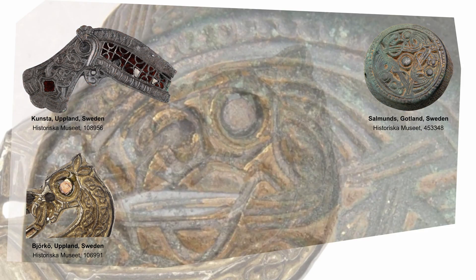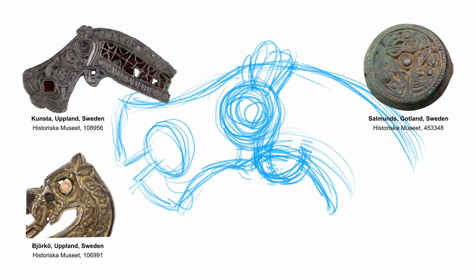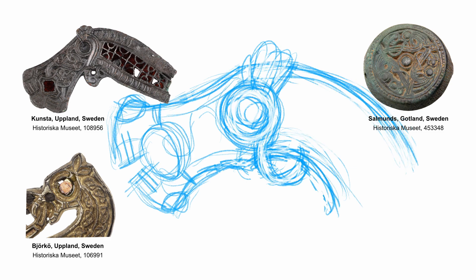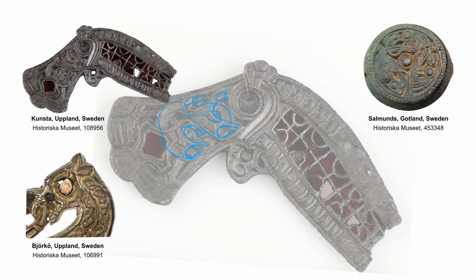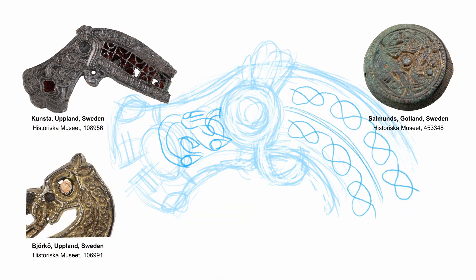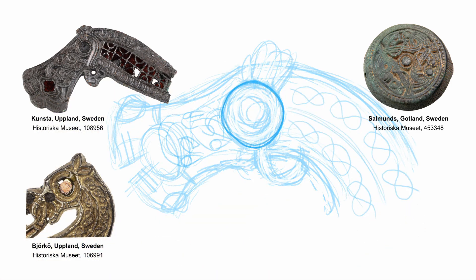Style 2D beast heads in profile are slender with a large round or oval eye. They have a horse-head-like profile with pronounced front teeth, creating an oval open space between the two jaws and the front teeth.